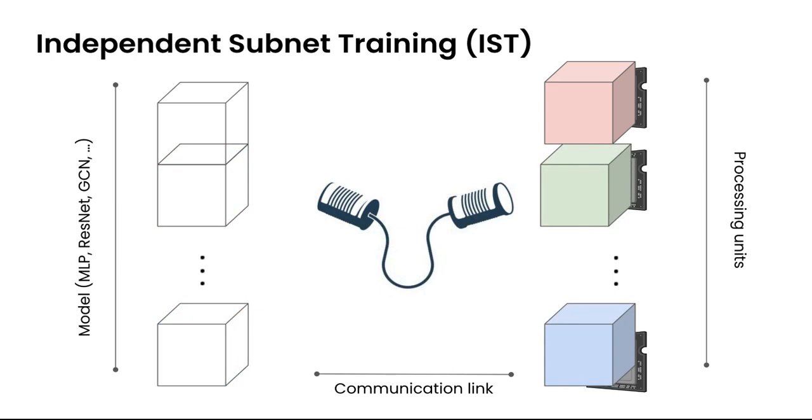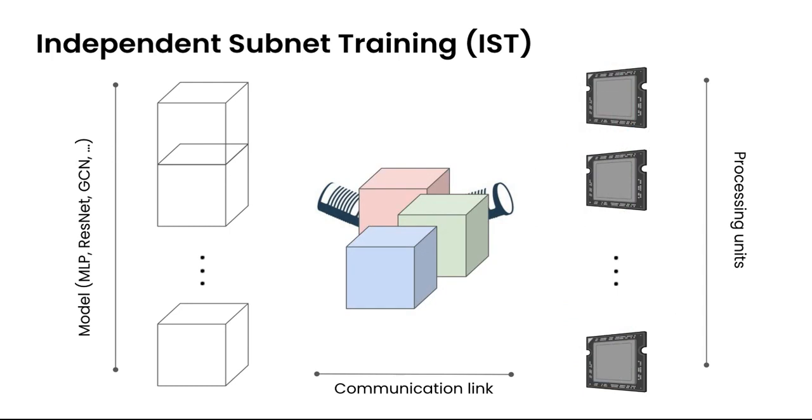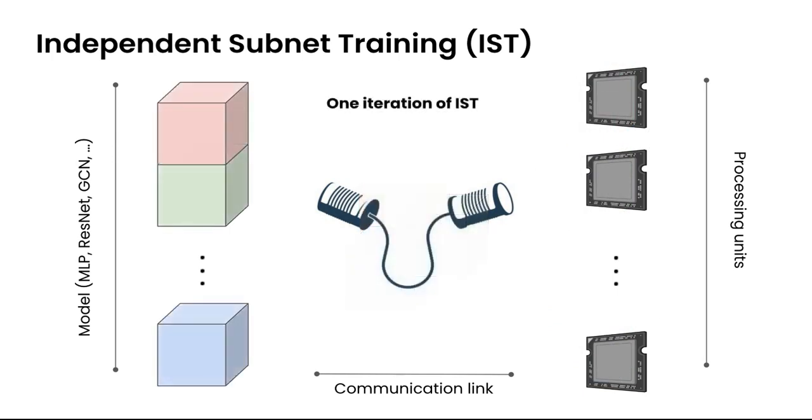Locally at each worker we could perform independently one or more local updates before these subnetworks are communicated back to the parameter server for reassembly. This is just one iteration of the independent subnet training or IST.